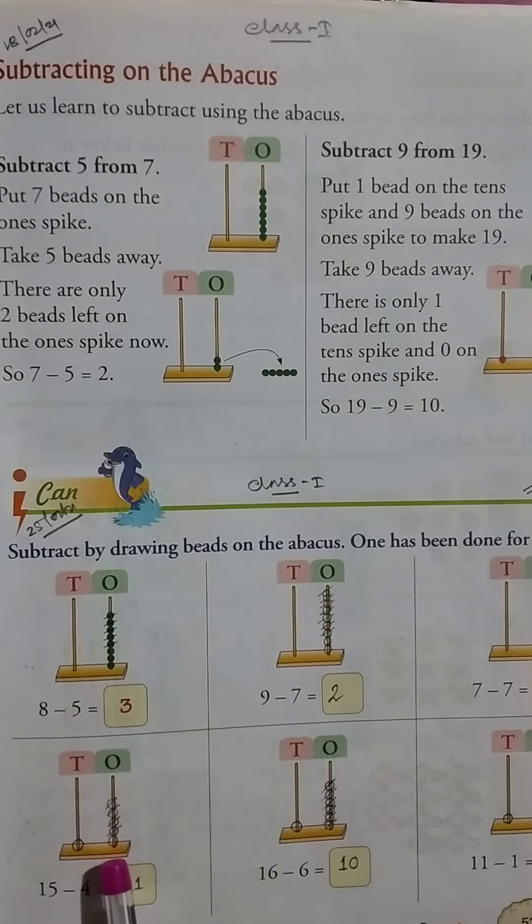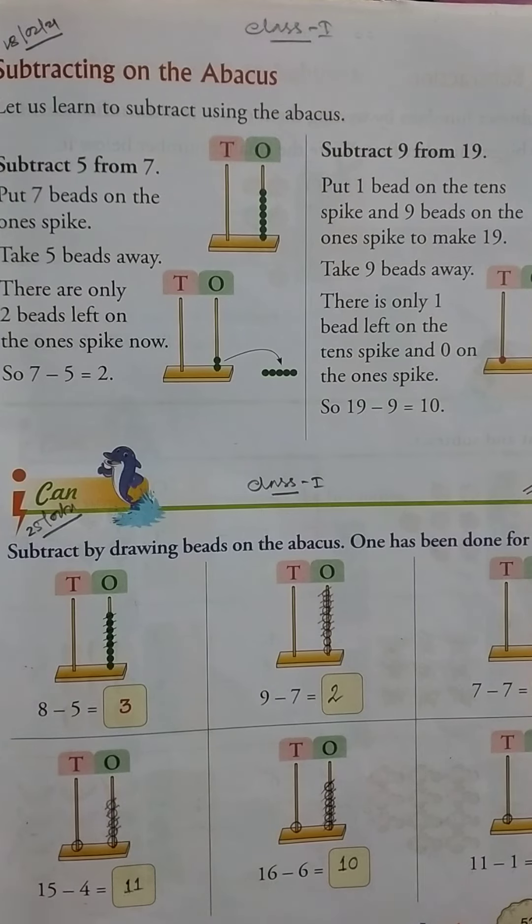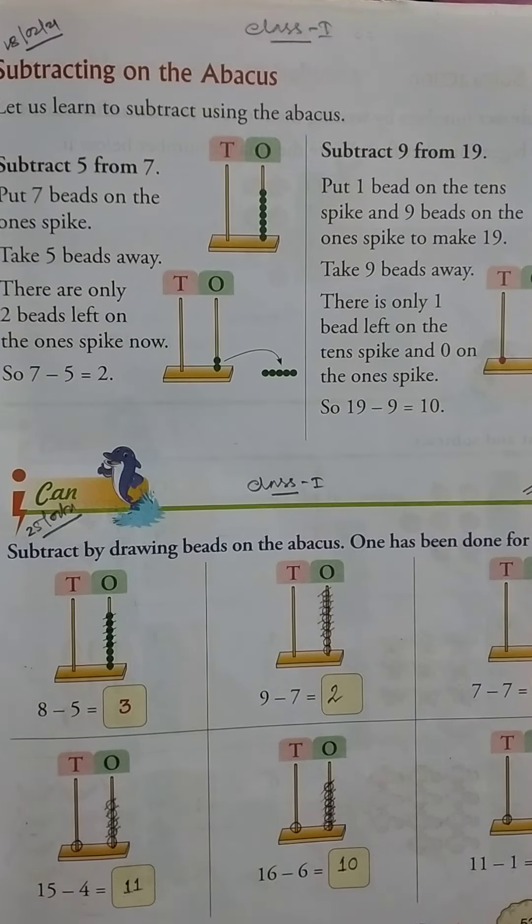On the tens spike and here look at this, 11. So 15 minus 4 equals 11. Thank you.